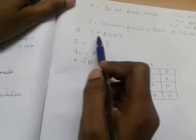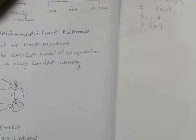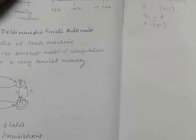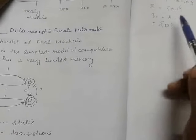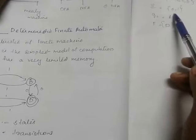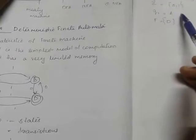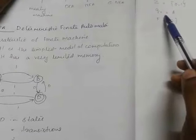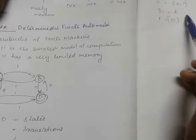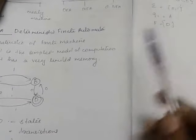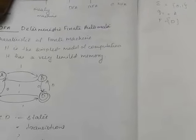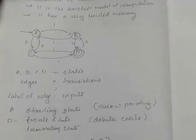The set of states Q is {A, B, C, D}. The input alphabet Σ is {0, 1}. The initial state q0 is A, and the set of final states F is {D}.